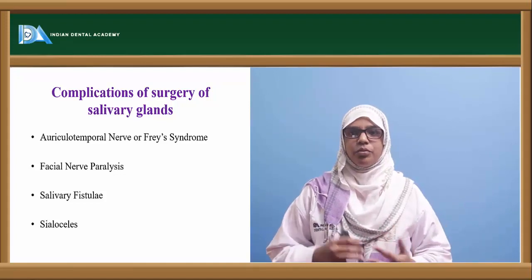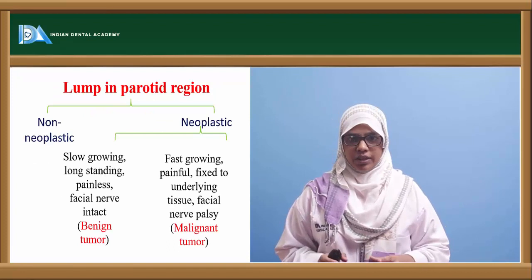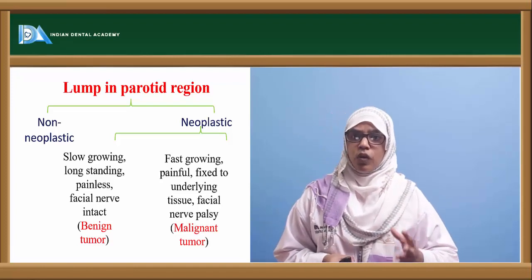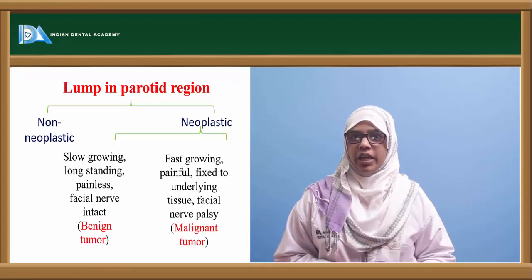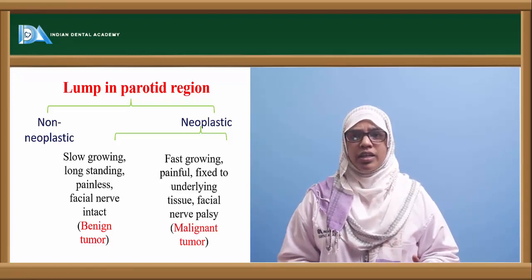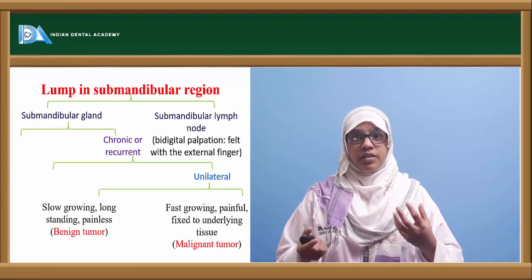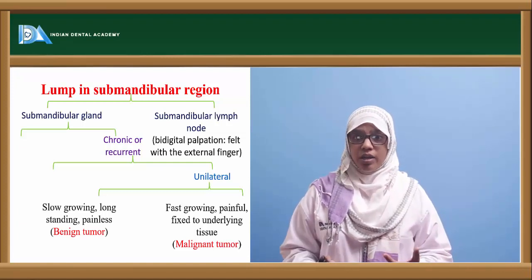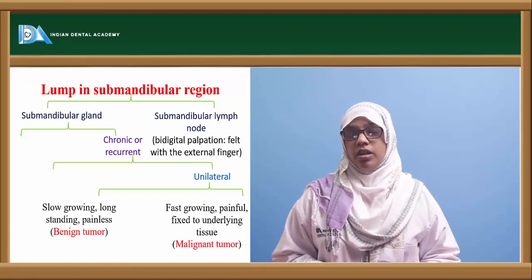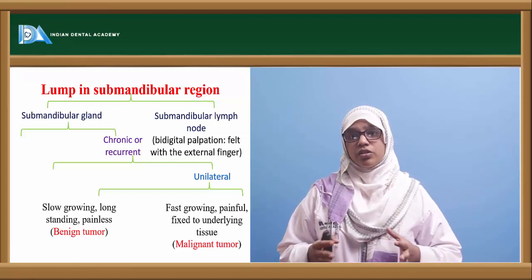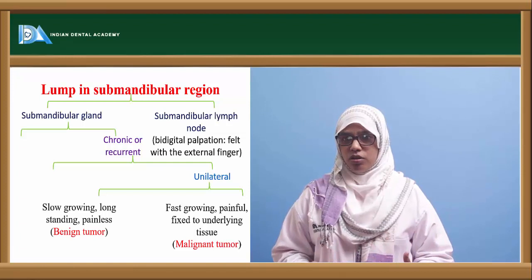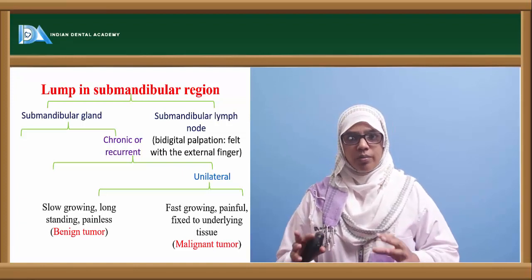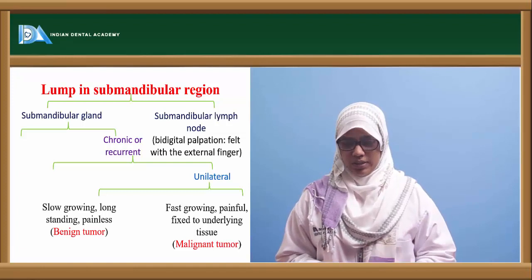To summarise: if there is a lump in the parotid gland, a slow growing, long-standing, painless lump without facial nerve damage indicates a benign tumour. But if it is fast growing, painful, fixed to the underlying tissue, and there is facial nerve damage, it is definitely malignant. Similarly, for a lump in the submandibular gland — enlarged lymph nodes are bilateral, but if the lump is unilateral, slow growing, not causing pain, and long-standing, it is benign. If it is fast growing, painful, and fixed to the underlying structure, it is a malignant tumour.